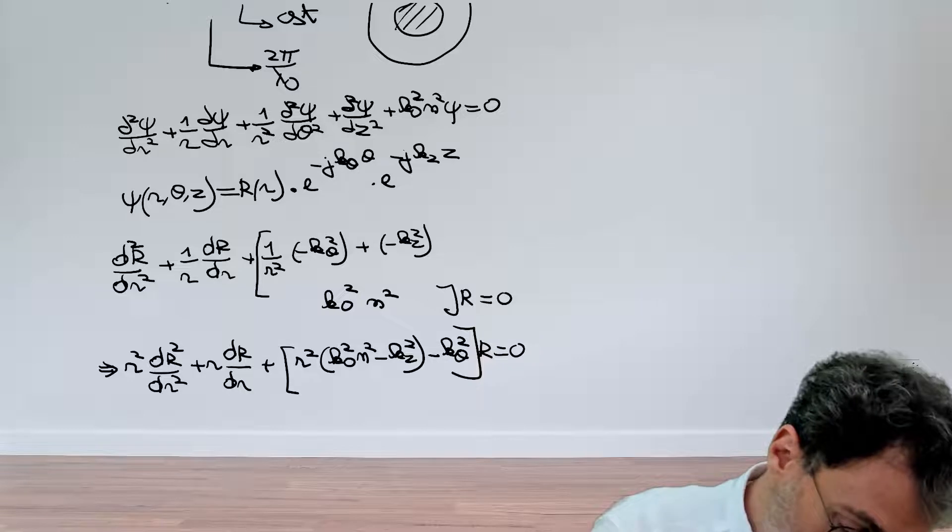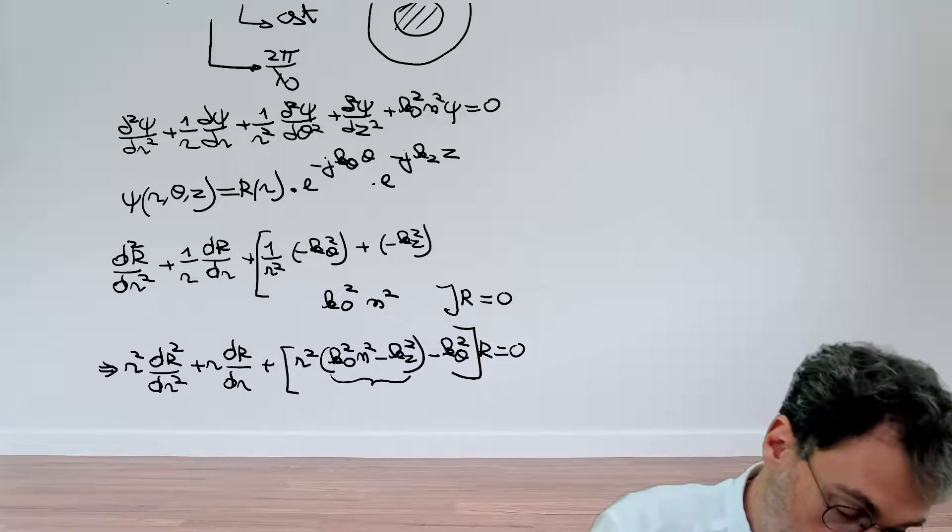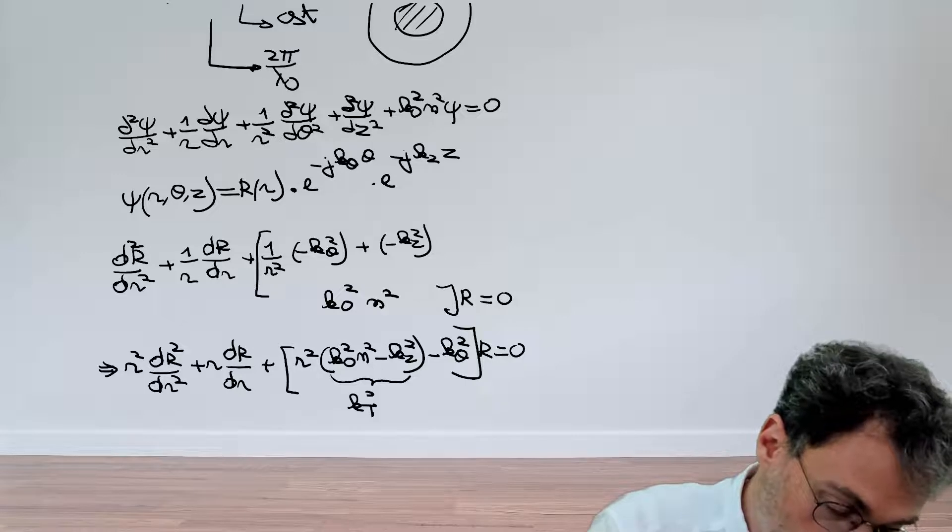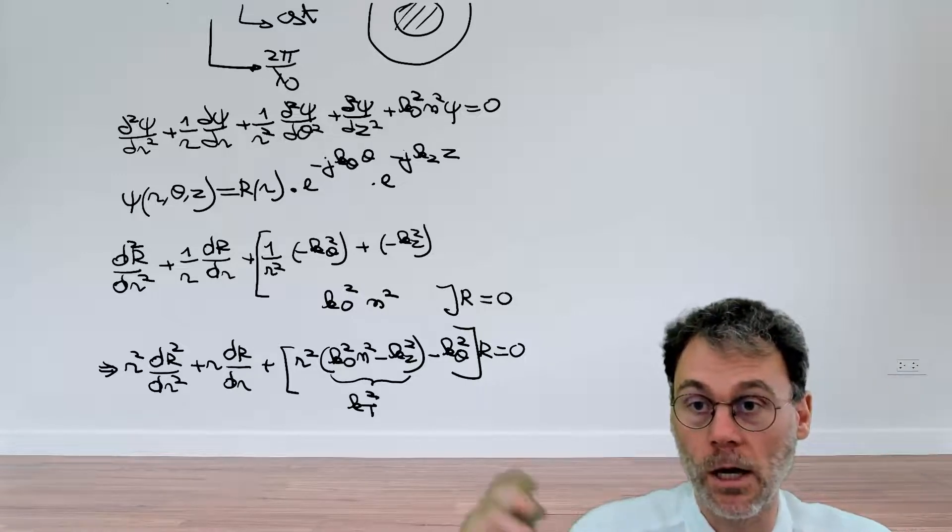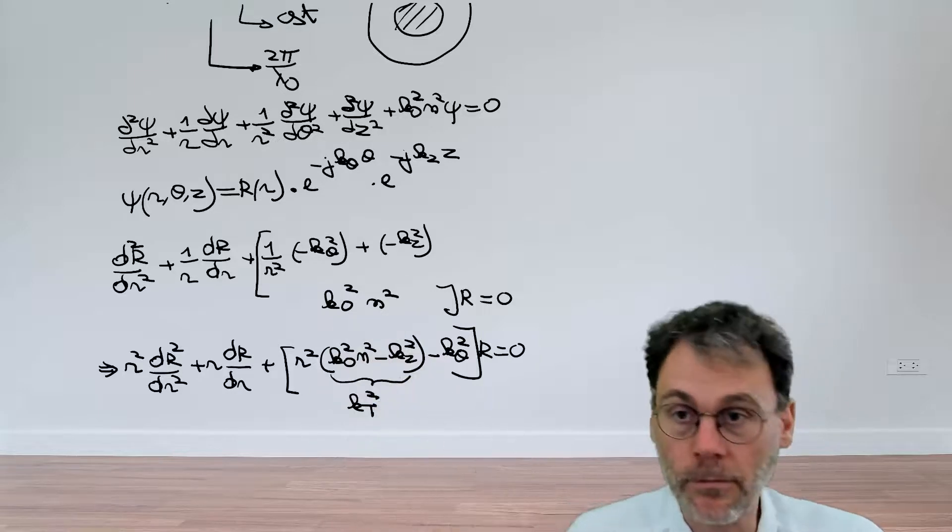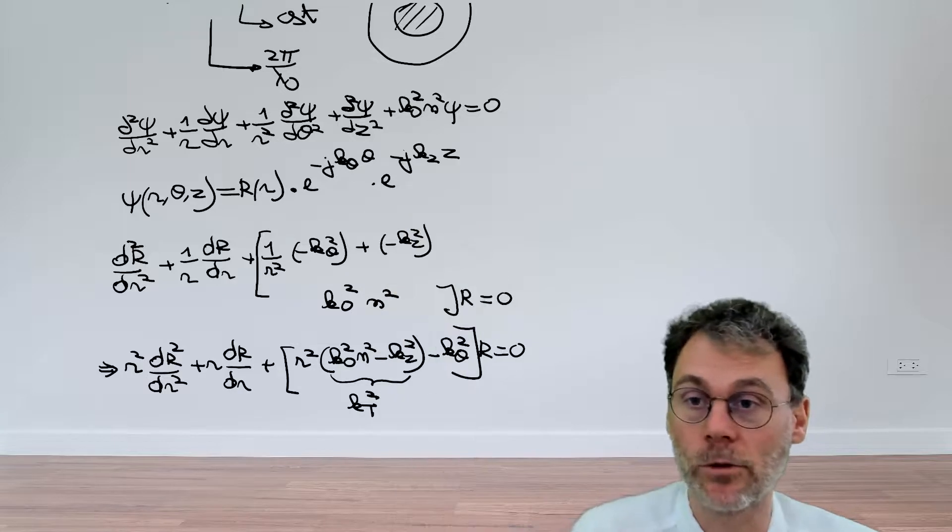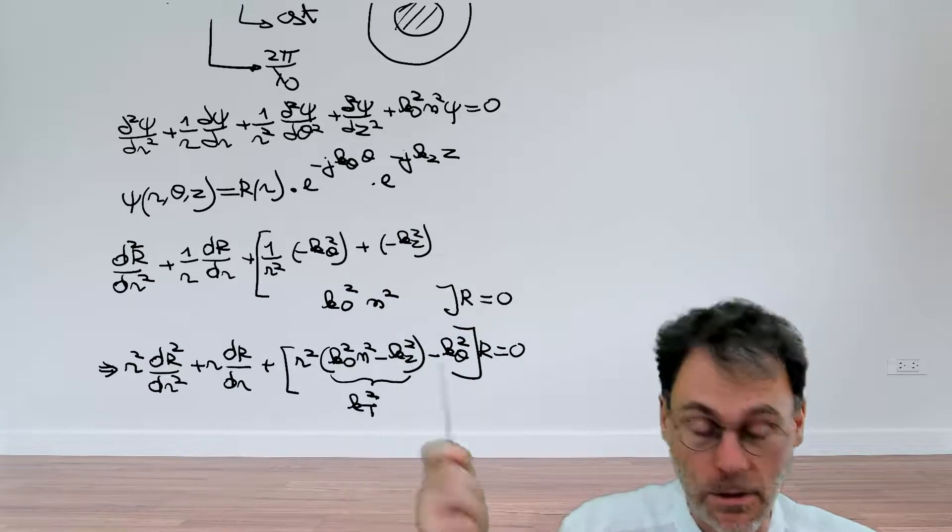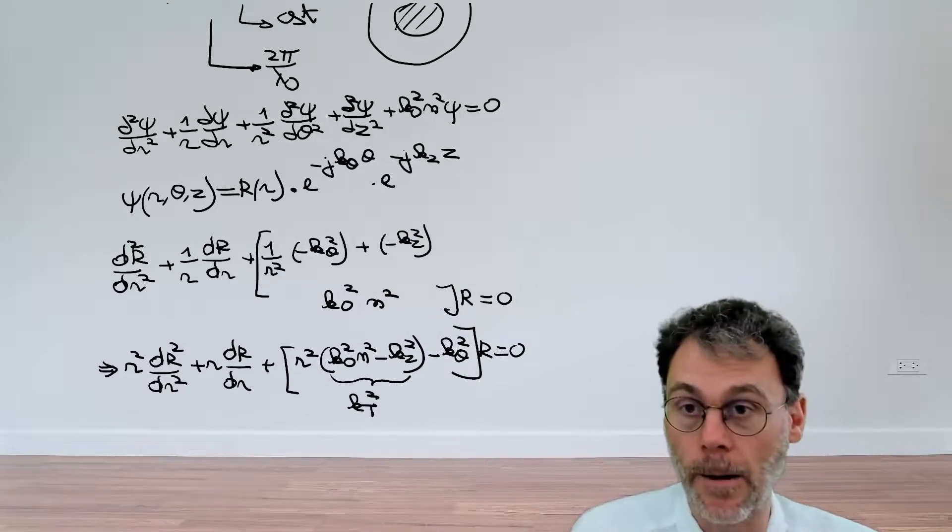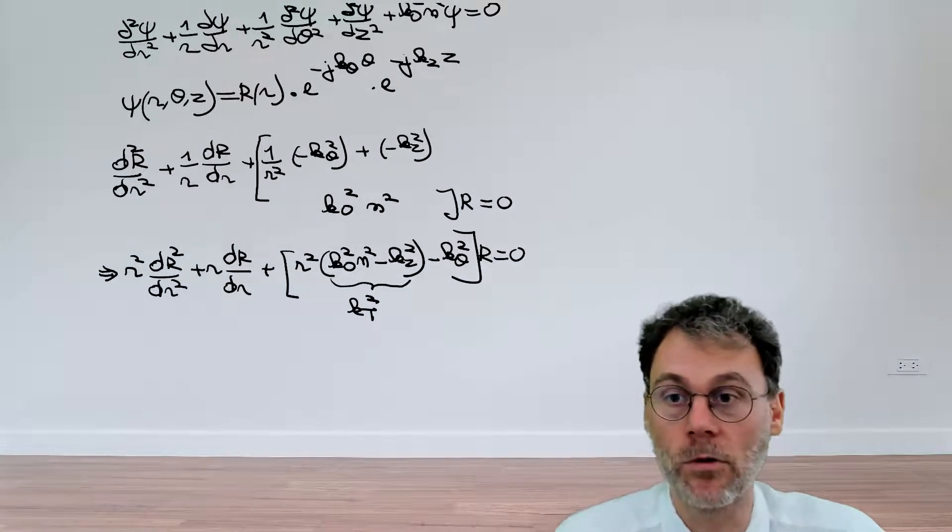This looks already a bit nicer. But we can do even better and realize that this thing over here is just a constant. So we're going to give that constant another name, namely kt². Why do I call it kt²? What's the physical meaning behind all of this? Again, this will be explained when you really calculate the eigenmodes of the optical fiber. Let's for now just pretend that this is any old constant.